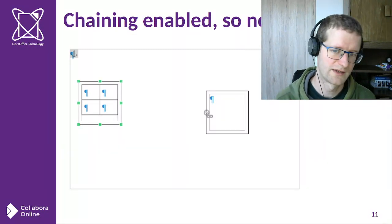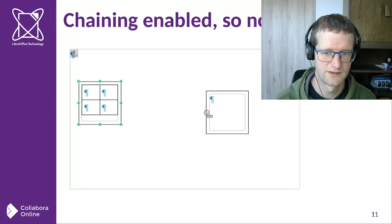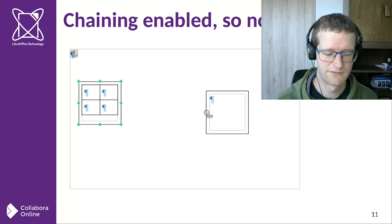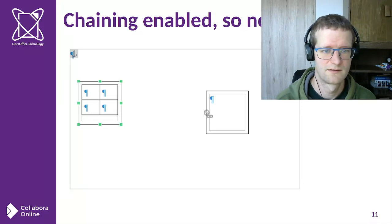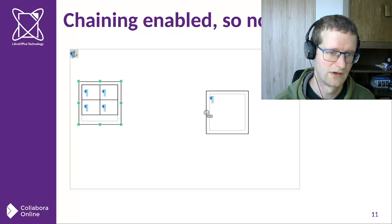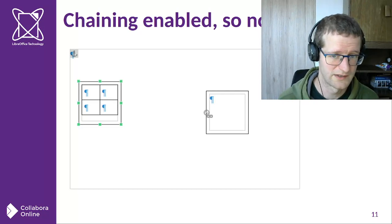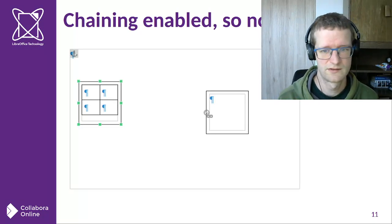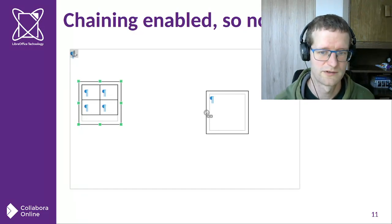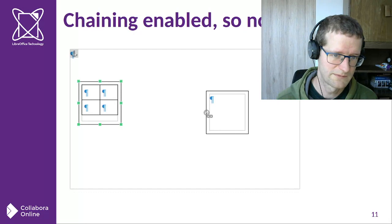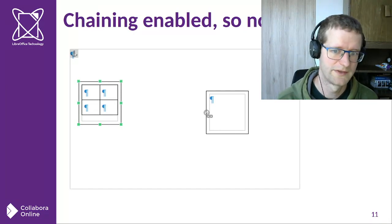Another related feature is the explicit pairing between two fly frames in the document model, which lets you chain explicitly created frames. This doesn't make sense when the first frame is allowed to split, because it's unclear whether content that no longer fits should flow to the next explicitly chained frame or split. So we don't allow chaining in the UI to avoid confusion — either you chain your frames but don't split, or you split but don't chain.